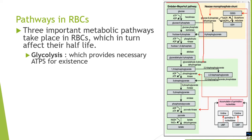Glycolysis usually has 11 different steps, converting glucose via different intermediate metabolites to the final product lactate within the RBCs. In a few of these steps, ATP is generated, which enables RBCs to carry out their functions.